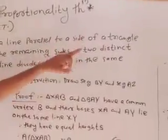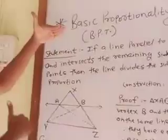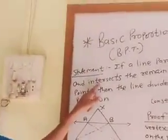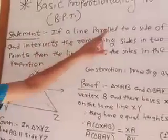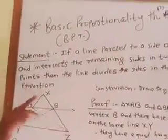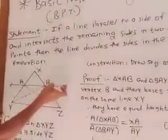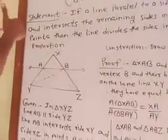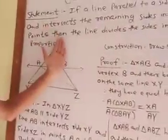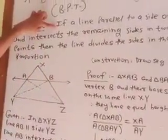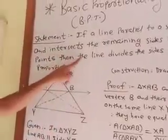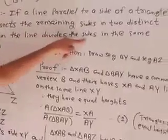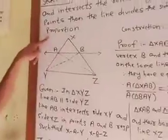The statement is: if a line is parallel to one side of a triangle and intersects the remaining two sides in two distinct points — we have three sides and this line is parallel to one side and intersects the remaining two sides in two distinct points — then the line divides the sides in the same proportion.